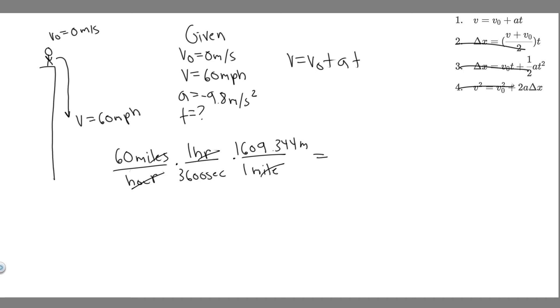So you just want to do 60, divide by 3,600, and then multiply by 1,609.344. And when you do that, you'll get about 26.82, and then the units are meters per second, which is what we want. So this is going to be the correct velocity in the correct units. So now what we can do is, since we have everything in the correct units, we can just plug in.